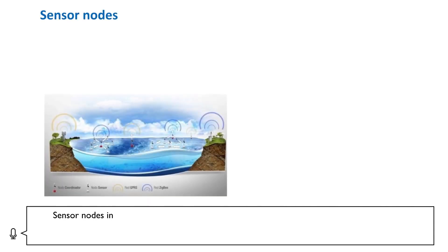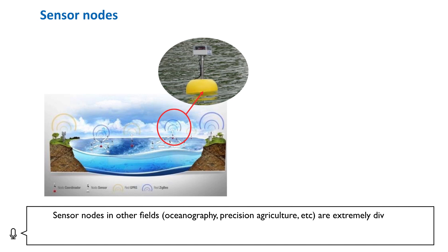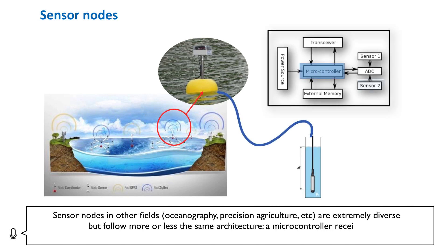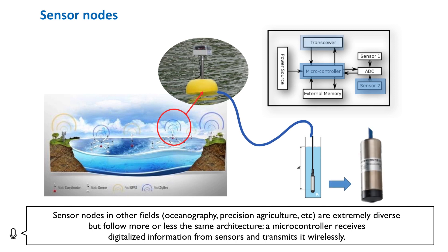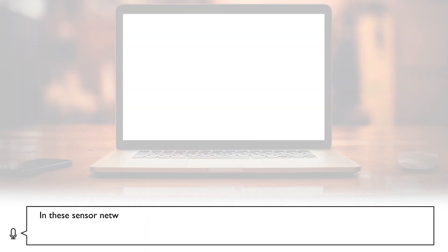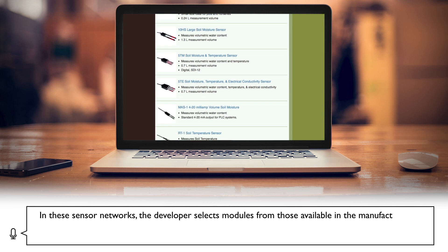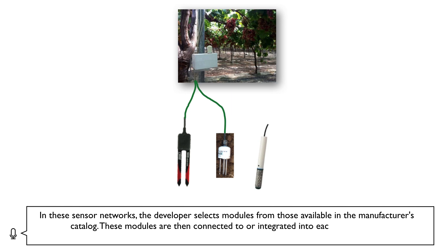Sensor nodes in other fields — oceanography, precision agriculture, etc. — are extremely diverse but follow more or less the same architecture. A microcontroller receives digitalized information from sensors and transmits it wirelessly. In these sensor networks, the developer selects modules from those available in the manufacturer's catalogue, which are then connected to or integrated into each sensor node according to the application.